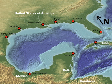The Gulf of Mexico is an ocean basin and a marginal sea of the Atlantic Ocean, largely surrounded by the North American continent. It is bounded on the northeast, north and northwest by the Gulf Coast of the United States, on the southwest and south by Mexico, and on the southeast by Cuba.